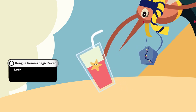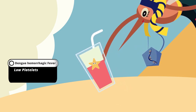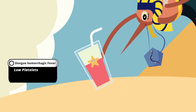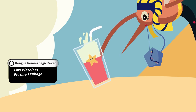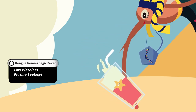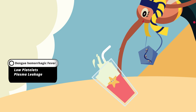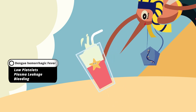It represents low platelets in dengue hemorrhagic fever. The plasma is spilled out to represent the leakage of plasma. Blood is leaking from the bottom to represent bleeding.